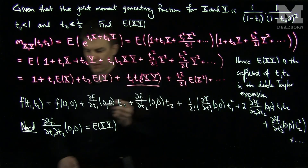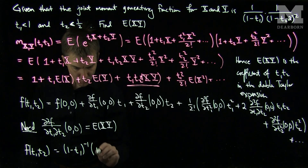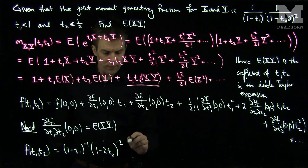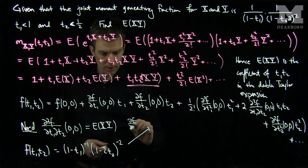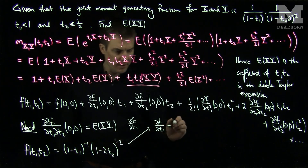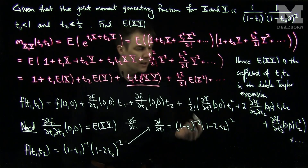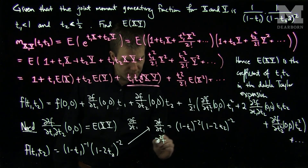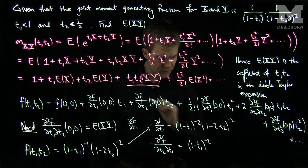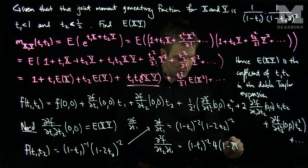Let's rewrite our function. Our f(t1, t2) is (1 minus t1) to the negative 1 times (1 minus 2*t2) to the negative 2. If we first take the t1 derivative, partial f over partial t1 equals negative 1 times negative 1, which stays positive, giving (1 minus t1) to the negative 2 times (1 minus 2*t2) to the negative 2. Then taking the derivative with respect to t2, the second mixed partial equals (1 minus t1) to the negative 2 times negative 2 times negative 2, which is positive 4, times (1 minus 2*t2) to the negative 3.